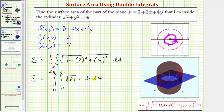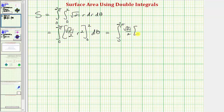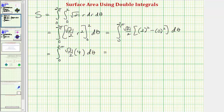Evaluating the integral, we first find the antiderivative with respect to r. That gives us the square root of twenty-one times r squared divided by two, or the square root of twenty-one divided by two times r squared. With the outer integral from zero to two pi, when r equals two we get two squared, and when r equals zero we get zero. This simplifies to two times the square root of twenty-one.